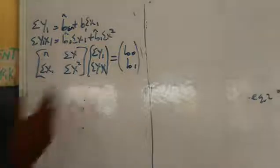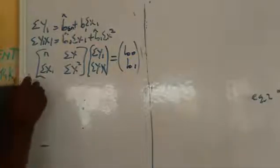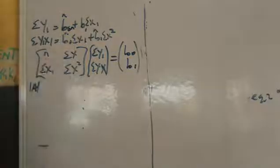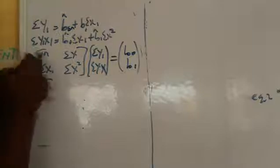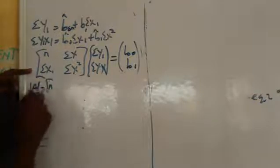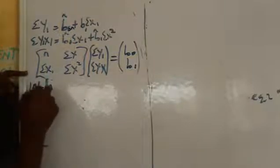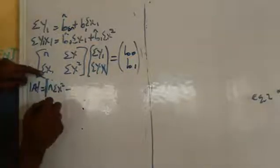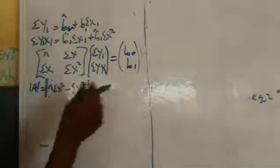I just find my determinant. To find the determinant, it is the major diagonal minus the minor diagonal. So my determinant: the major diagonal — I multiply n by Σx-squared — minus the minor diagonal, which is Σx times Σx. That's my determinant.